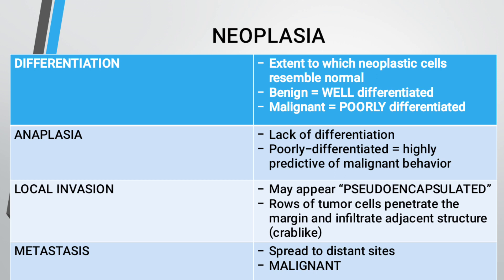Speaking about properties and characteristics: differentiation refers to the extent to which neoplastic cells resemble normal cells. Benign tumors are well differentiated; malignant tumors are poorly differentiated. Anaplasia is the lack of differentiation and is predictive of malignant behavior. Local invasion — the tumor may appear pseudo-encapsulated; tumor cells penetrate the margin and infiltrate the adjacent structure.